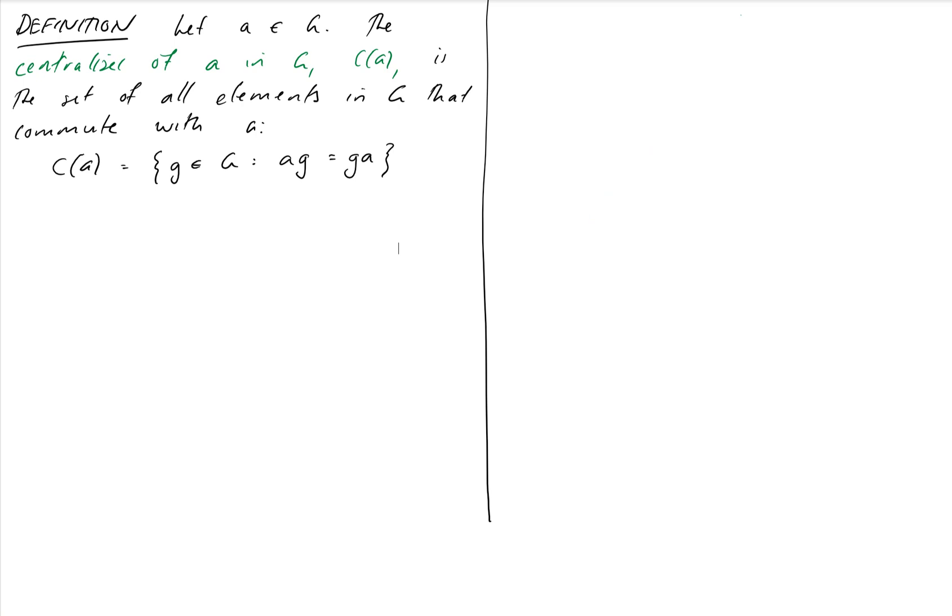Here's the definition: Let A be a member of G. The centralizer of A in G, which we write as capital C(A), is the set of all elements in G that commute with A. Sometimes it's good to write these things in set notation because that makes it even clearer what we mean. So the key point to fix in our heads is that a centralizer applies to an element of the group, whereas the center, which is similar-ish, applies to the entire group.